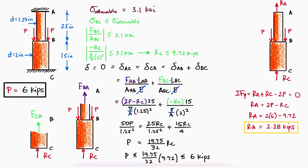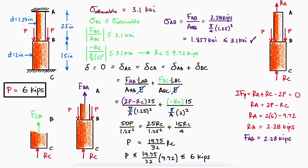This force, which is equivalent to FAB, the internal force in section AB, can be used to calculate the normal stress in section AB and confirm that the stress is lower than the maximum allowable stress. This confirms that two external loads P of 6 kips would cause the normal stress of section BC to be exactly the maximum allowable normal stress of 3.1 KSI while preventing the other section AB from exceeding it.